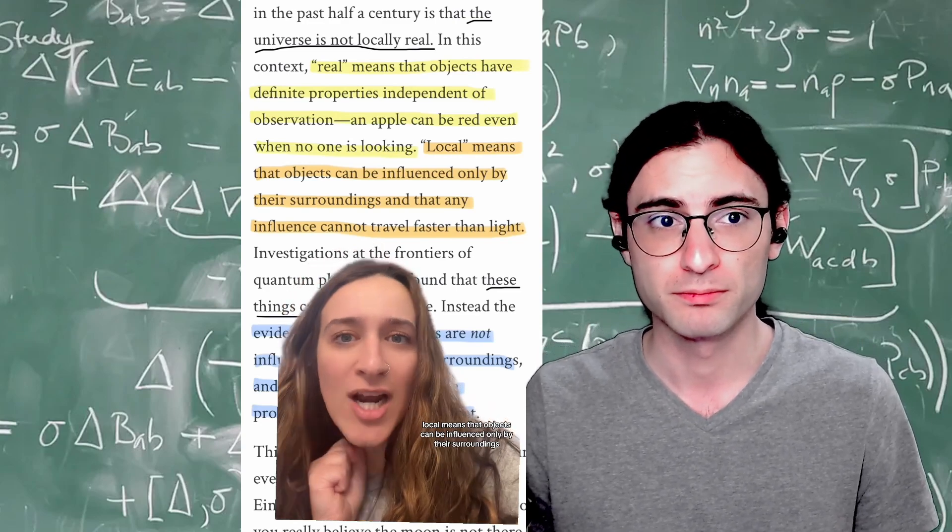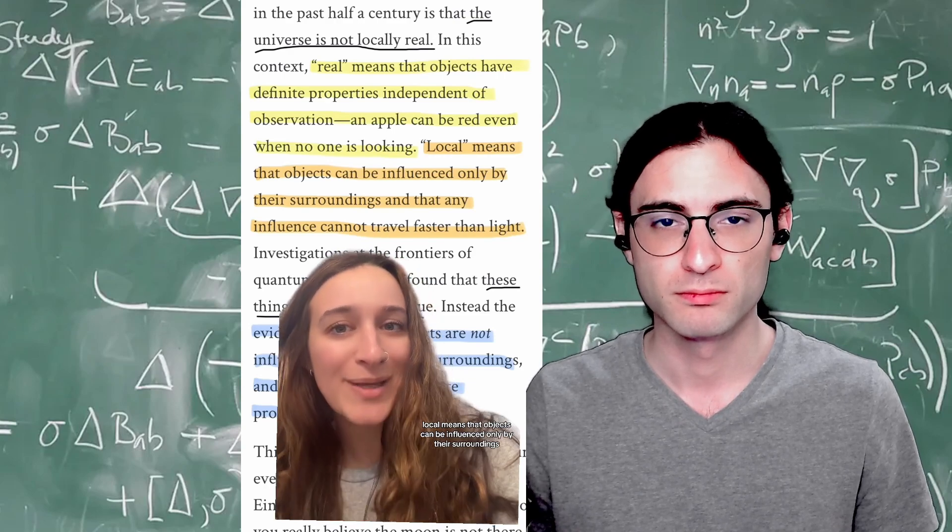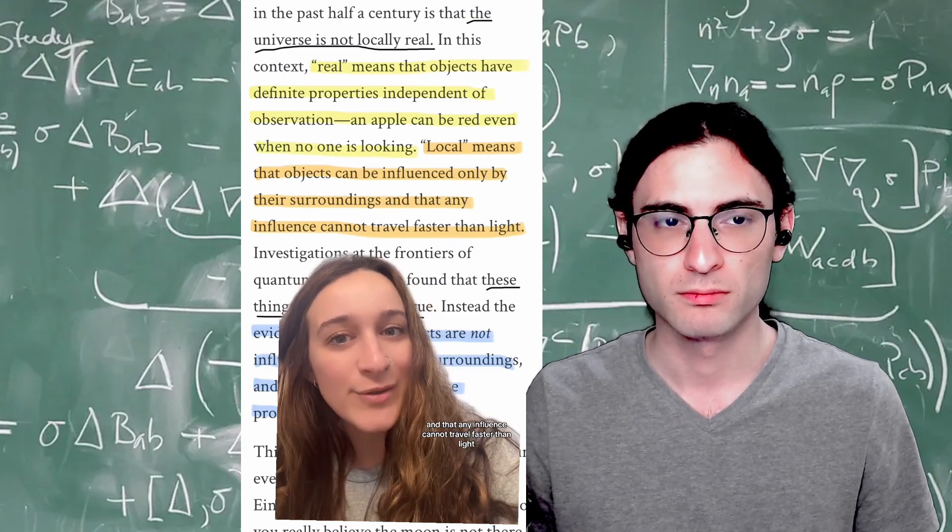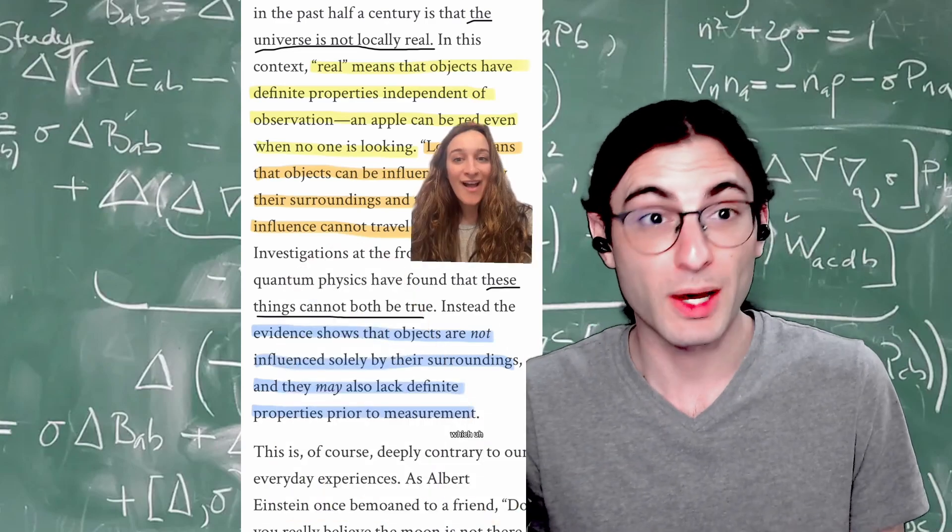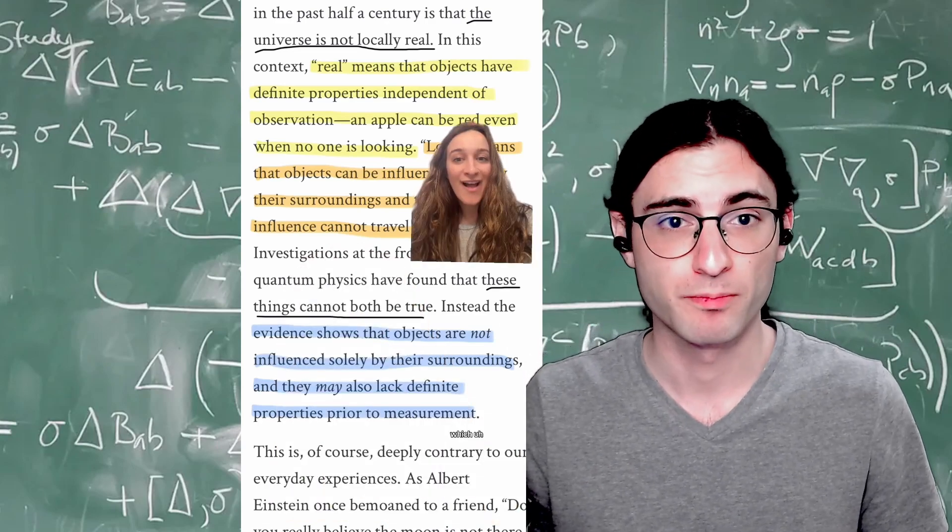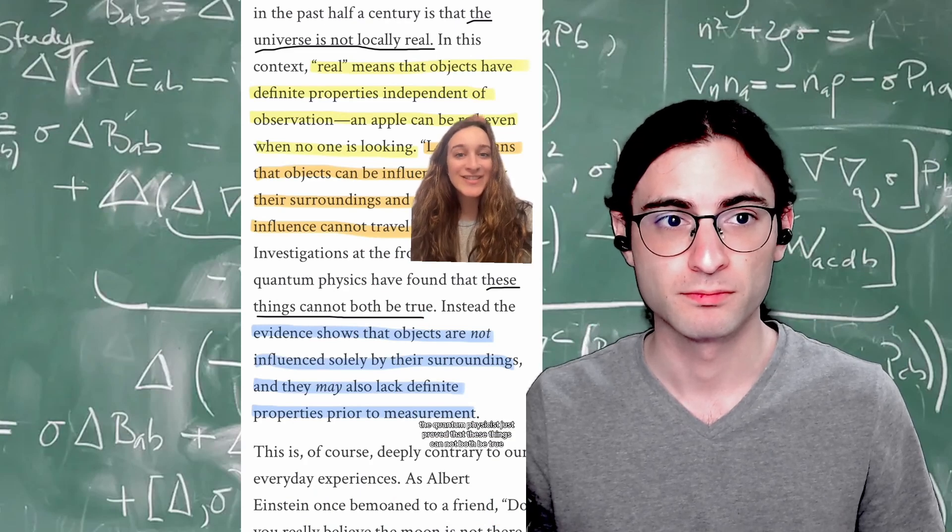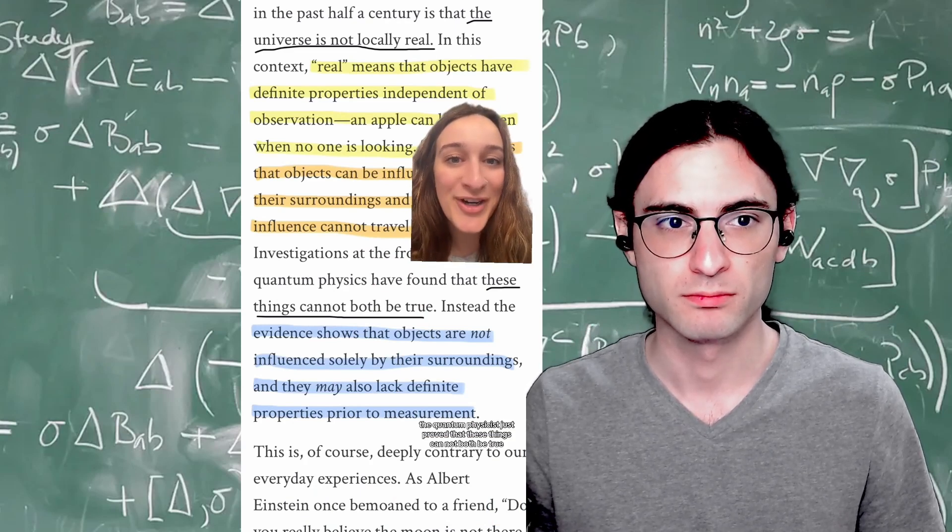That objects can be influenced only by their surroundings and that any influence cannot travel faster than light, which the quantum... So this is about locality and it's a fairly good explanation. Some physicists just proved that these things can not both be true.